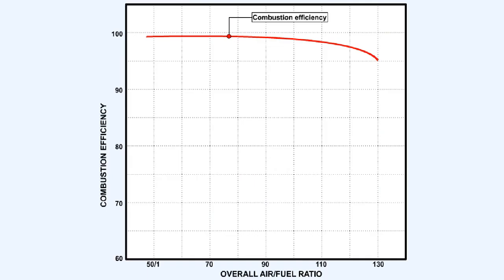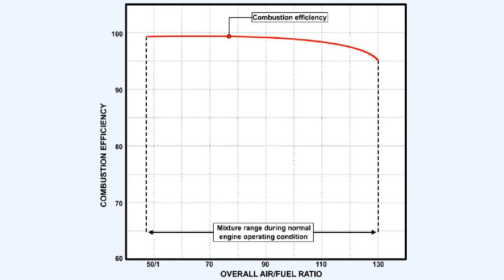Combustion efficiency is the efficiency with which the combustor assembly extracts the potential heat actually contained in the fuel. This graph shows the combustion efficiency of a modern gas turbine engine across the range of air-fuel ratios which occur during normal operating conditions.